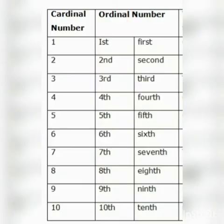Let us know more about ordinal numbers. The simple counting like 1, 2, 3, 4 are cardinal numbers, and ordinal numbers are 1st, 2nd, 3rd, 4th.